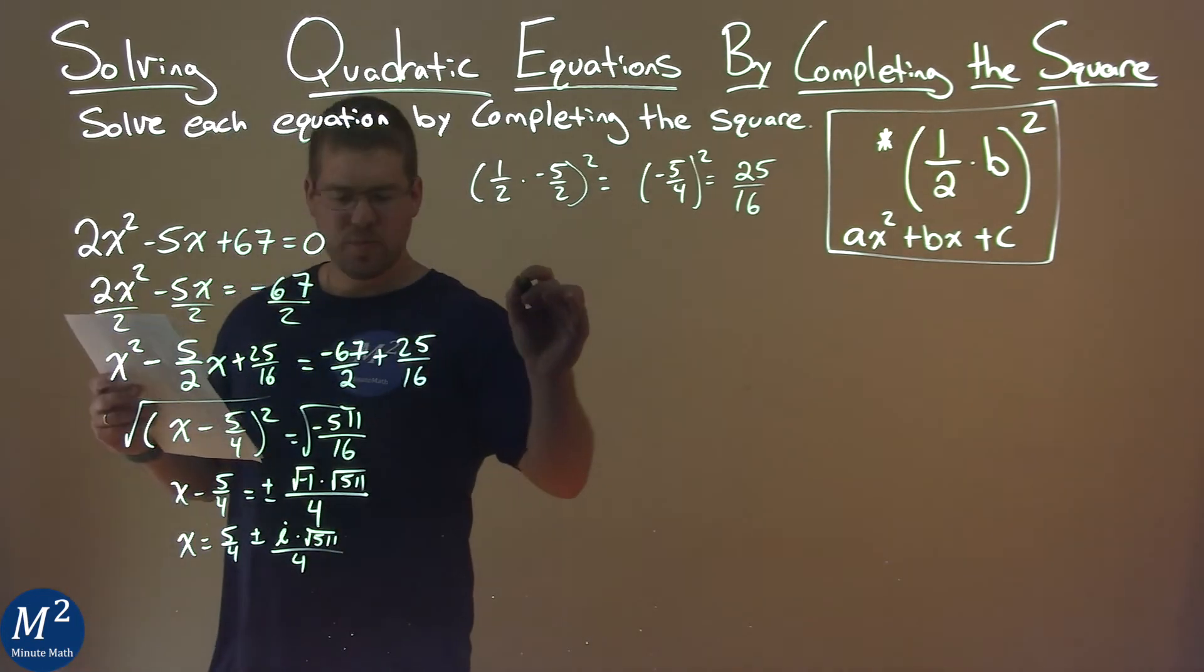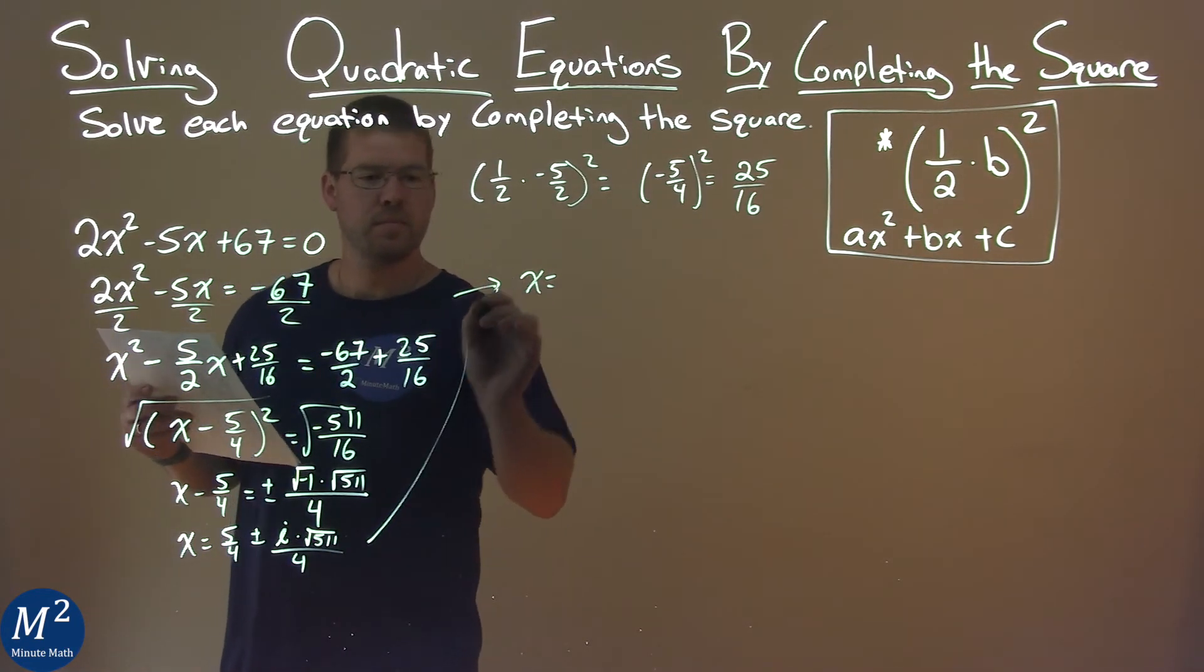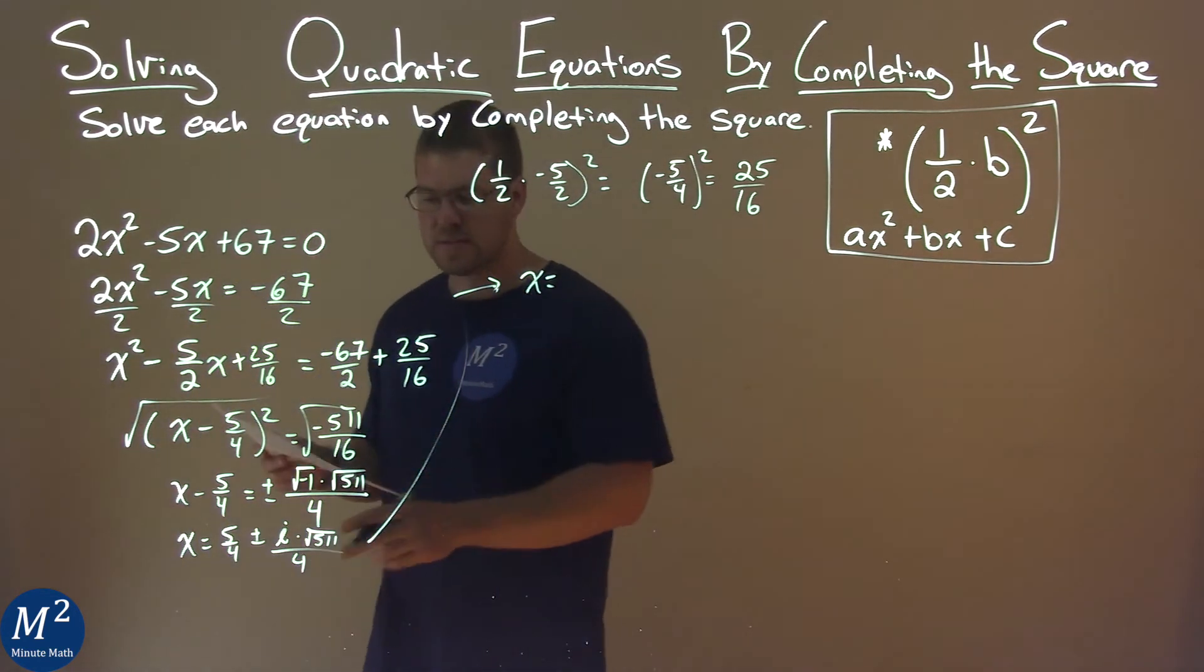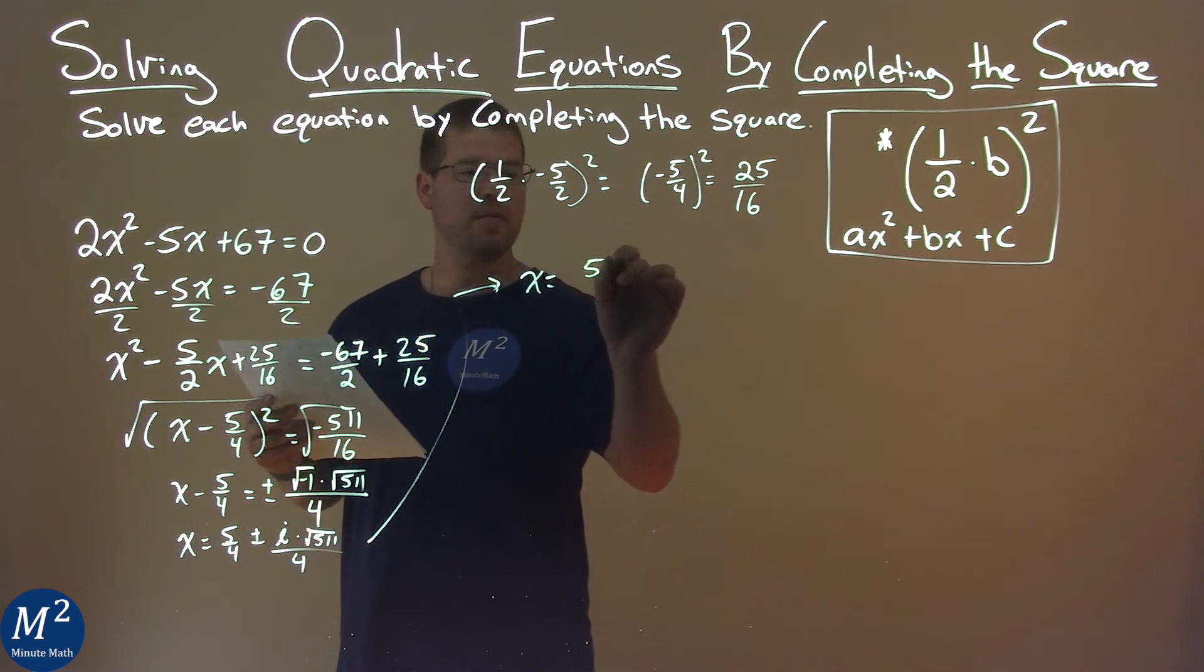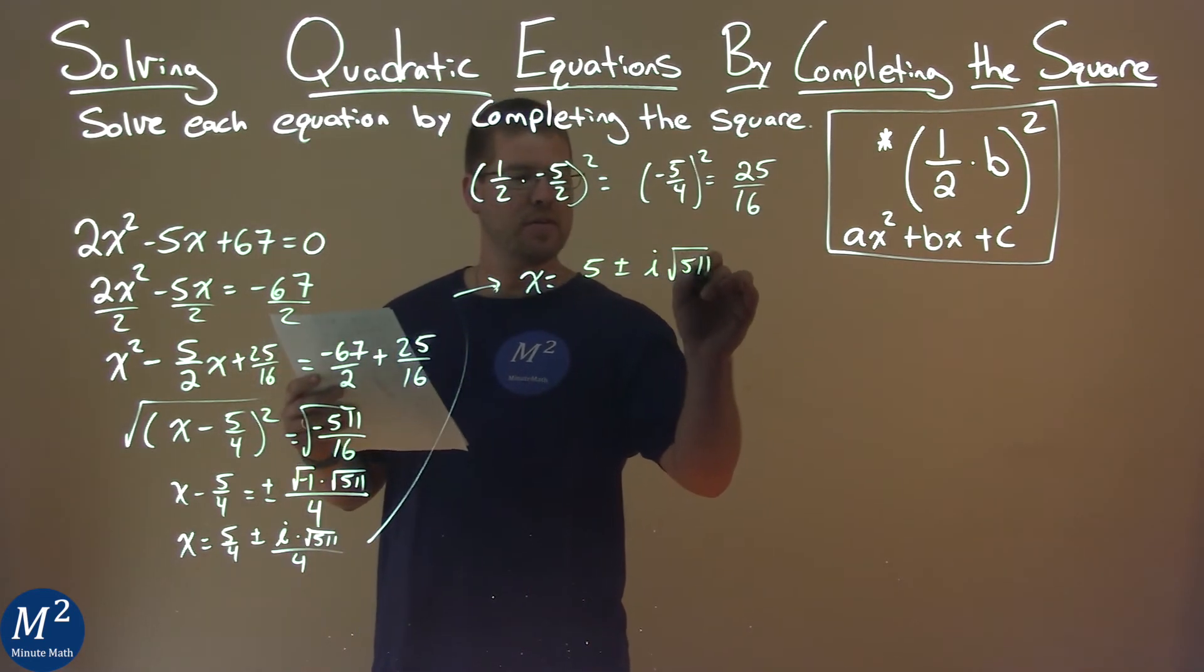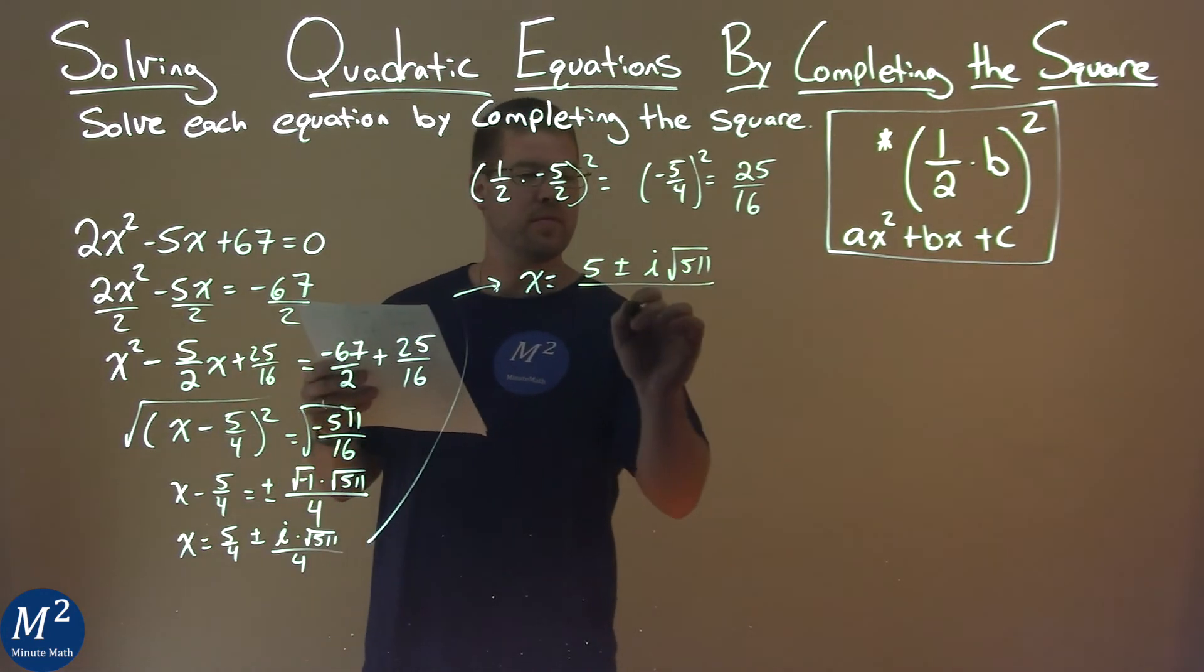Let's continue up here, and notice we have the same denominator of 4 and 4, so we can write this as a single statement: 5 plus or minus i square root of 511, which doesn't simplify anymore, over 4.